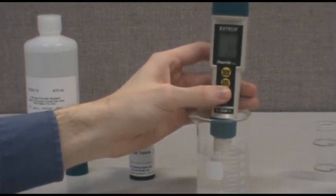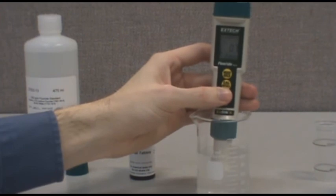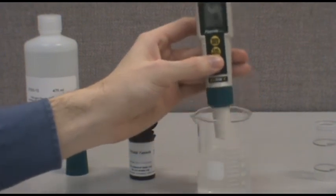The meter can be stored wet or dry. It is recommended that it be stored wet in the last solution used. If stored dry, it will be necessary to soak the meter in fluoride solution for 15 minutes before its next use.